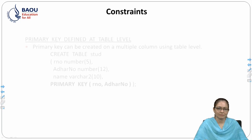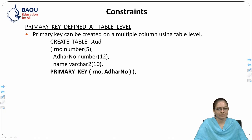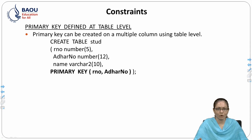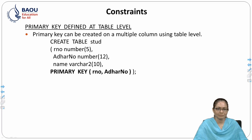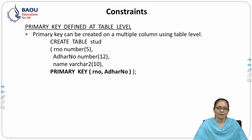For a primary key defined at the table level, it is defined after all columns are declared. The primary key can be created on multiple columns using the table level. For example: CREATE TABLE student with columns roll_number NUMBER(5), adhar_number NUMBER(12), and name VARCHAR2(10). At the table level, we define PRIMARY KEY(roll_number, adhar_number) — making the combination of these two columns the primary key.